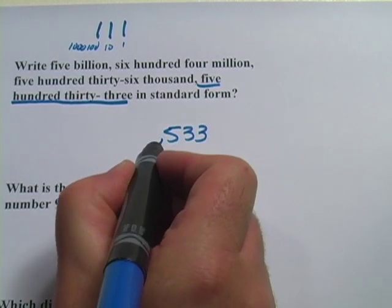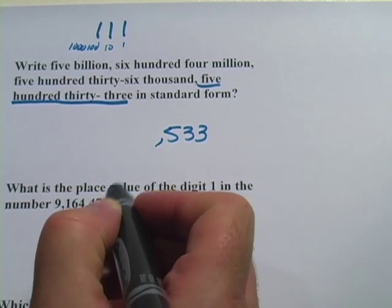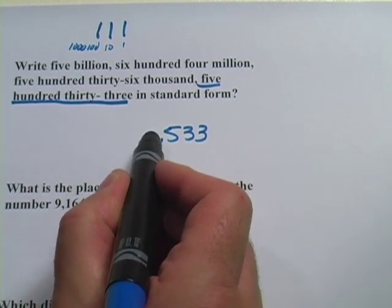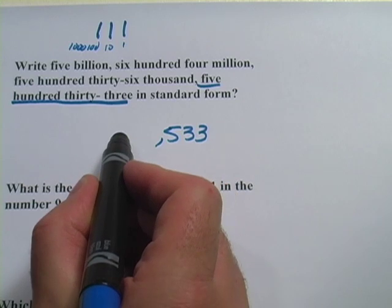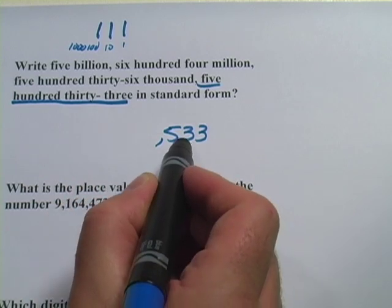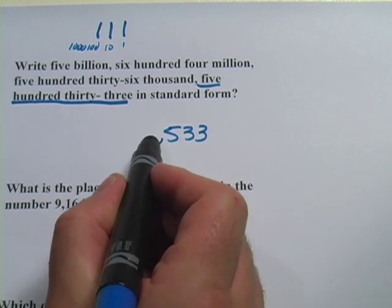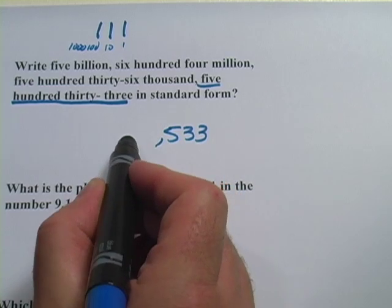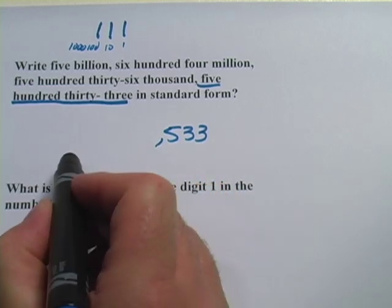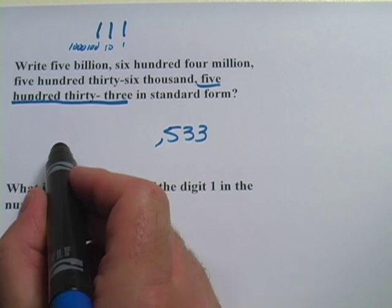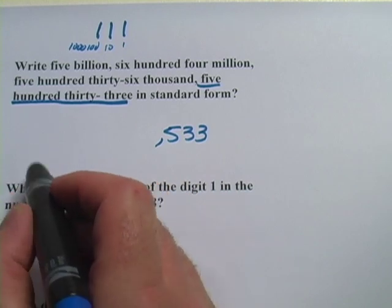And then it's useful to put those commas in now because here we're going to have all the thousands. The thousands, the 10,000's, the 100,000's. So this was the 1's, the 10's, and the 100's. This is the 1,000's, the 10,000's, and the 100,000's. And it's going to go up like that with the millions and the billions and the trillions just the same way.